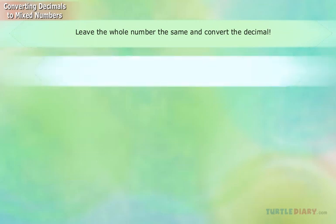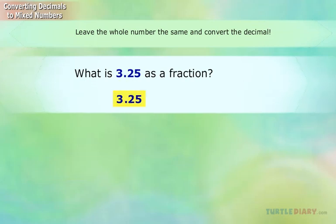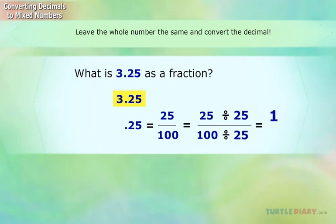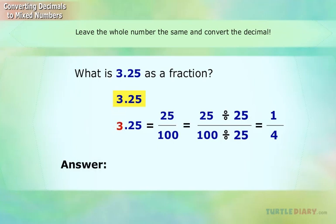What is 3.25 as a fraction? Just change .25 to a fraction: 25 hundredths. Now reduce the fraction — 25 hundredths divided by 25 equals one-fourth. Answer: 3 and one-fourth.